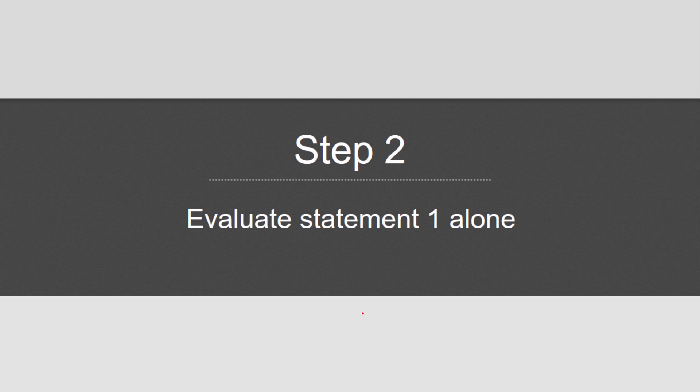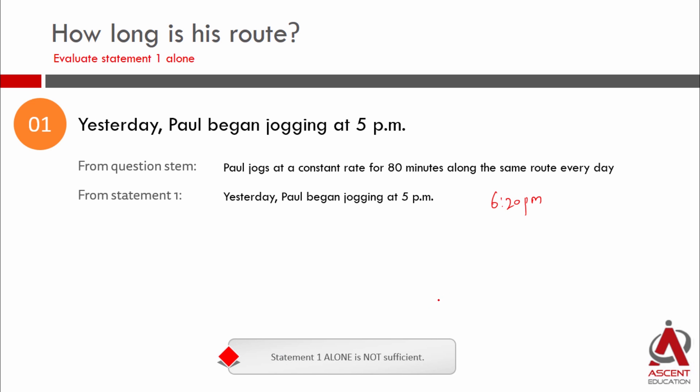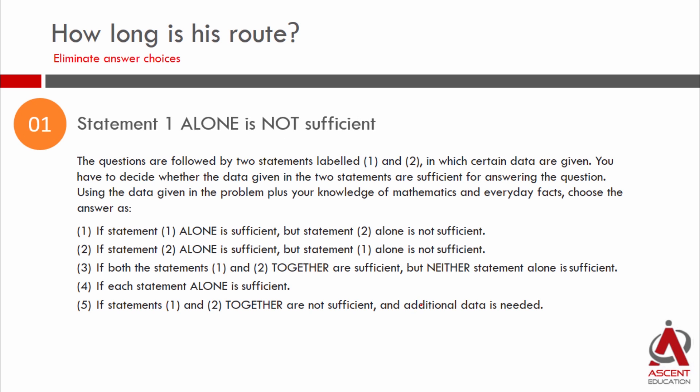Let's look at statement 1. Evaluate statement 1 alone. Statement 1 is not sufficient. So statement 1 is not answering our question. Statement 1 alone is not sufficient. We can eliminate answer choice 1. We can also eliminate answer choice 4, which says each statement is independently sufficient. So from 5 choices we eliminate 2. We have narrowed it down to 2, 3, or 5.